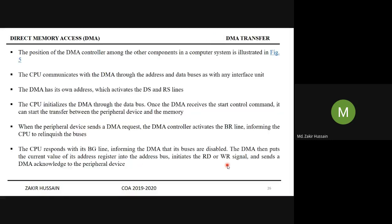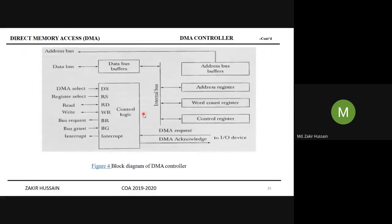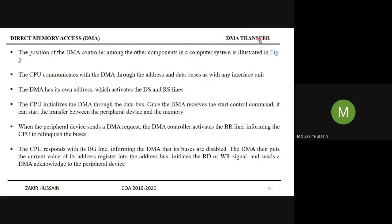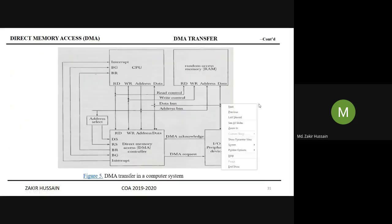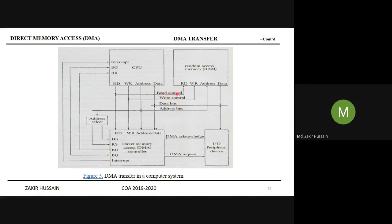Yesterday we discussed a lot about the DMA controller. Today let us see the DMA transfer. In this DMA transfer, we already looked at this figure and discussed several things — how the bus, read control, write control, data bus, address bus — all these lines together form the memory bus. We call it the memory bus because these wires are connected to the memory.